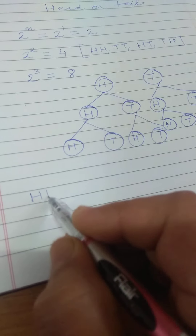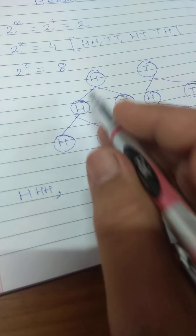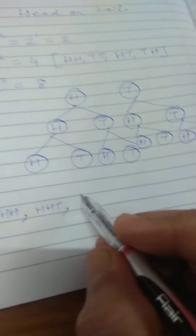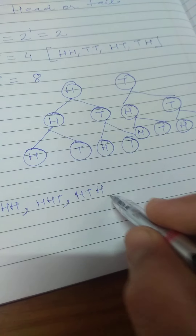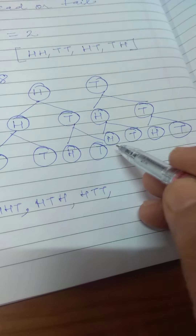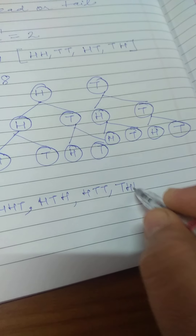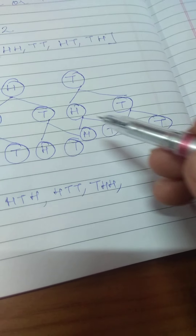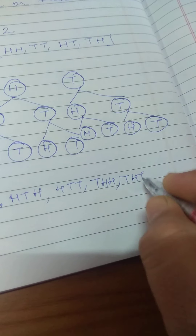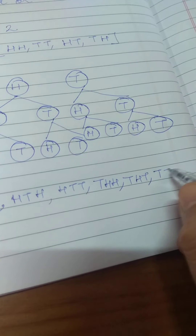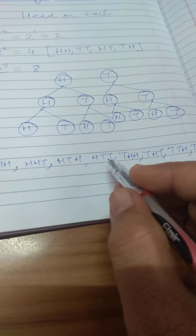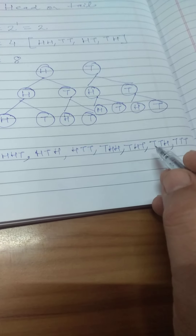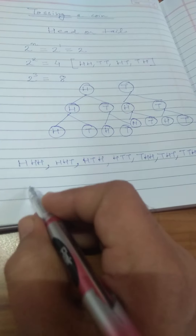So what will be the outcomes? The first outcome is head-head-head, the second is head-head-tail, the third is head-tail-head, the fourth is head-tail-tail, the fifth is tail-head-head, the sixth is tail-head-tail, the seventh is tail-tail-head, and the eighth is tail-tail-tail. So these are all eight outcomes.